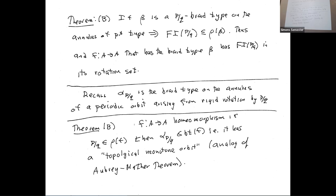Another theorem in the same line: alpha_{P/Q} is the braid type on the annulus of the periodic orbit arising by rigid rotation by P/Q. If you have any point with rotation number P/Q, then you have the simplest possible braid type for that rotation number. This is the topological version of the Aubrey-Mather theorem: if you have a rational in your rotation set, you have a Birkhoff periodic orbit — the one ordered around the annulus in the proper way. It follows from computing the pseudo-Anosov representative and pulling back to the arbitrary map.